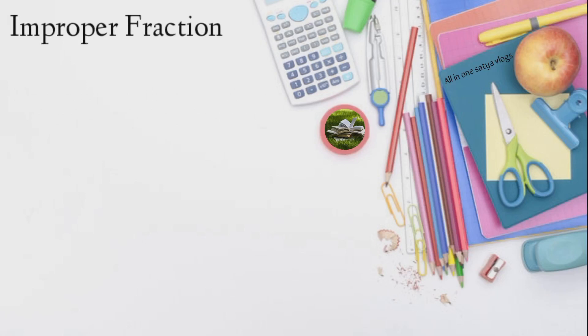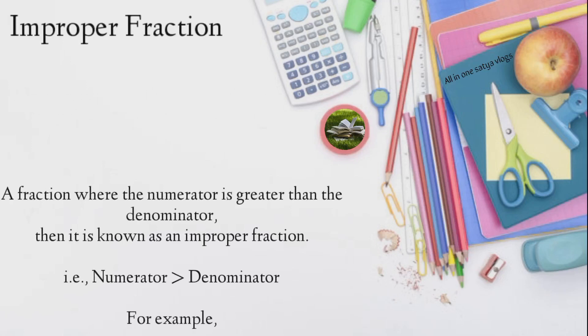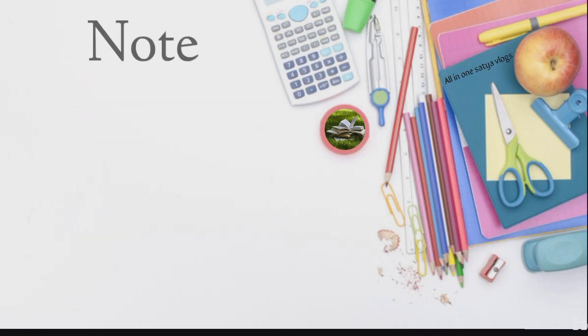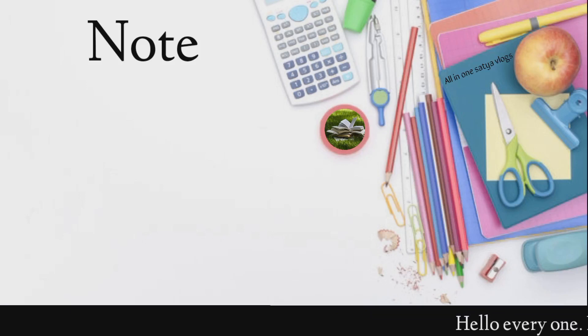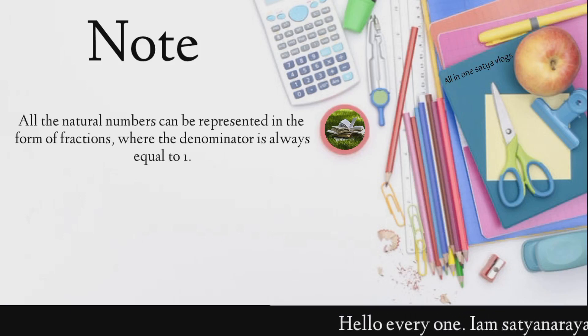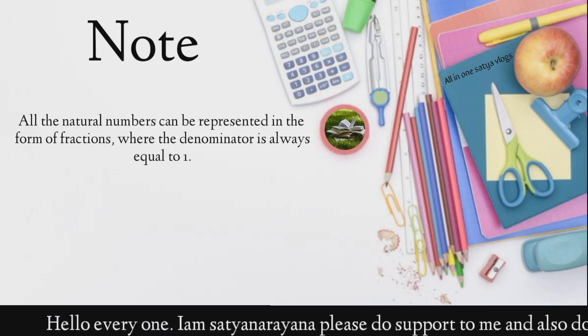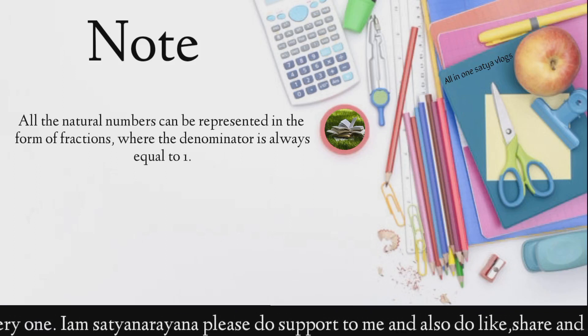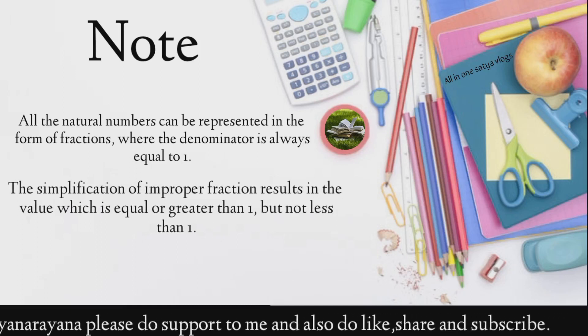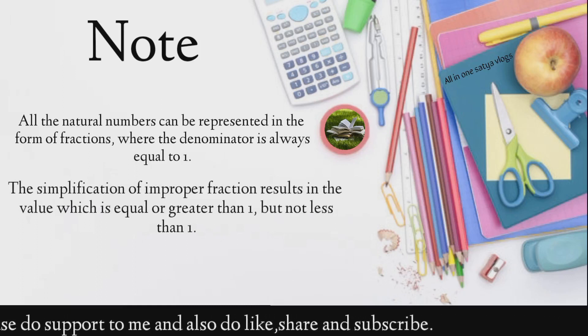Improper fraction. A fraction where the numerator is greater than the denominator, then it is known as an improper fraction. I.e., numerator greater than denominator, for example. Note: All the natural numbers can be represented in the form of fractions, where the denominator is always equal to one. The simplification of improper fraction results in the value which is equal or greater than one, but not less than one.